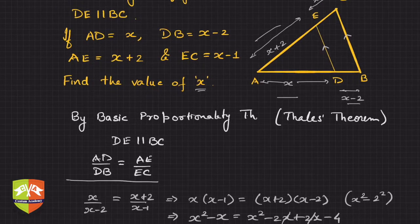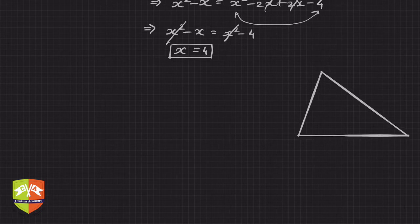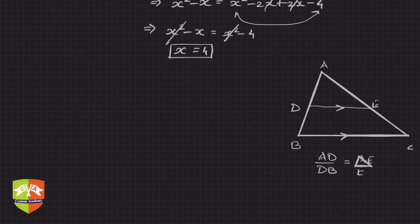The learning here is: please remember Basic Proportionality Theorem, or Thales Theorem. To recap for those who don't remember it — if I have a triangle ABC such that DE is parallel to BC (the arrow signs depict parallel lines), then we say AD upon DB is equal to AE upon EC.